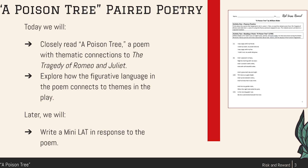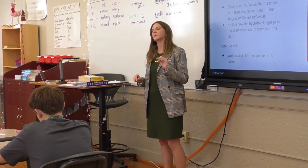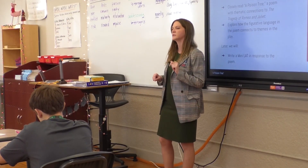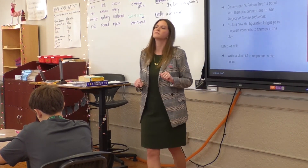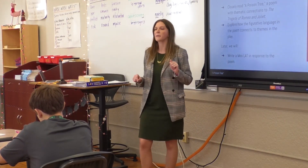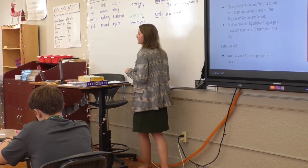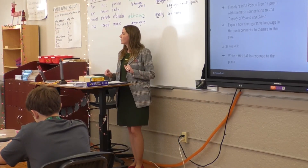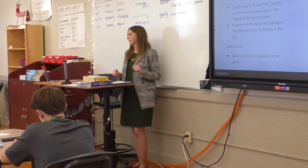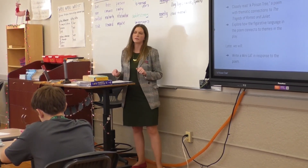Let's go. Today we're going to closely read a poem titled "A Poison Tree" and make some thematic connections to The Tragedy of Romeo and Juliet. Make sure you put your name on that paper. So, we're going to closely read the poem and make some thematic connections to Romeo and Juliet.